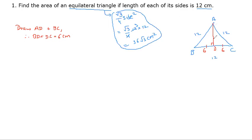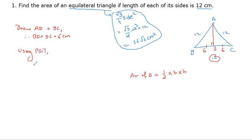Now, what do we need to do? We need to get the value of AD, because we know the area of a triangle is half base into height. We have base BC = 12, but height is AD, so we have to find this value using the Pythagoras theorem. Pythagoras theorem states: hypotenuse squared equals base squared plus perpendicular squared.